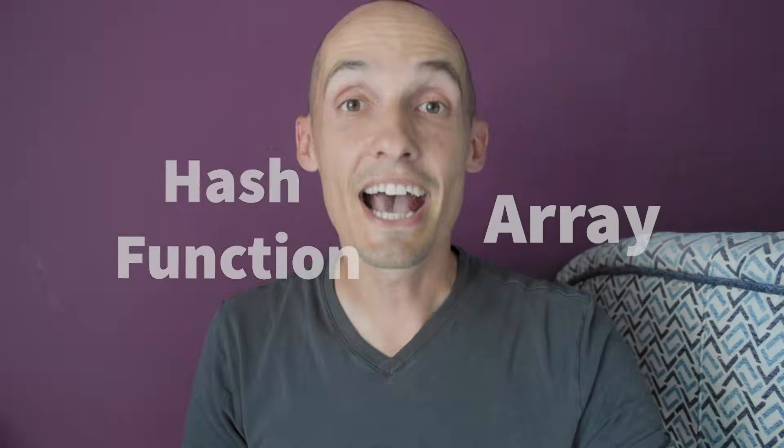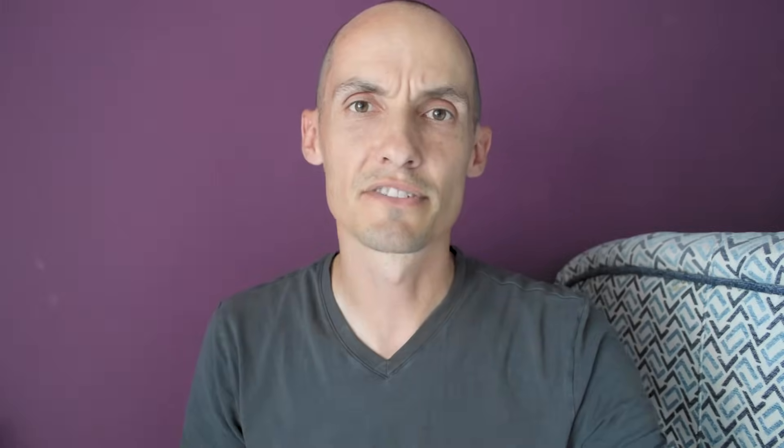So how does it work? Conceptually, a hash table is an array with a hash function. Our hash function is going to take some input, map that input to a location in our array, and that's where our item is stored.